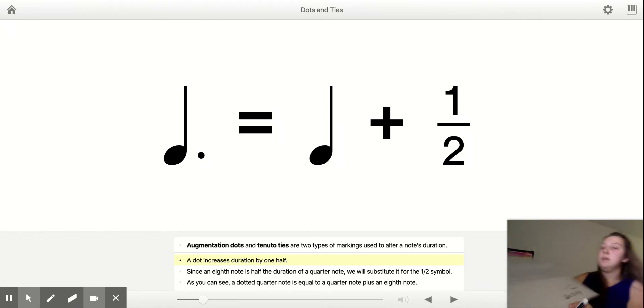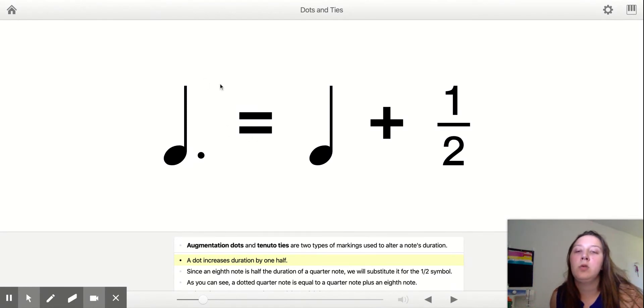Okay, let's continue with this example up on the screen. This one's just a little bit more complicated, so I want to start with easier ones. So the dotted quarter note is equal to a quarter note plus half of whatever the quarter note is.